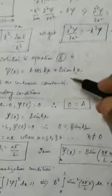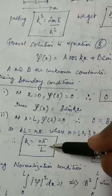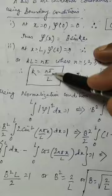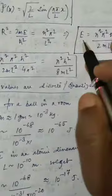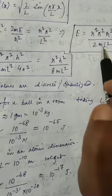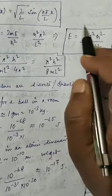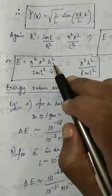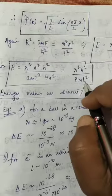And k was also equal to nπ/L, where n is an integer. So k² = 2mE/ℏ² = n²π²/L². Solving for the total energy E, we get E = n²π²ℏ²/2mL². This is the energy in terms of ℏ². Since ℏ = h/2π, we have ℏ² = h²/4π², and substituting gives E = n²h²/8mL². So this is the energy in terms of h².